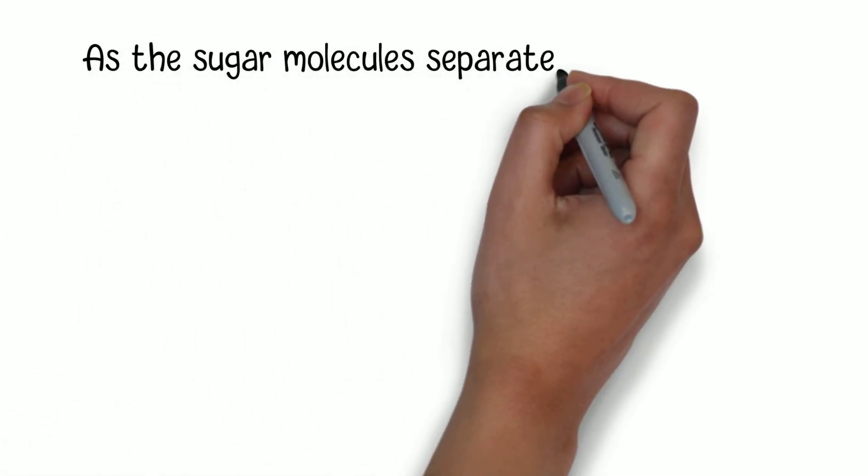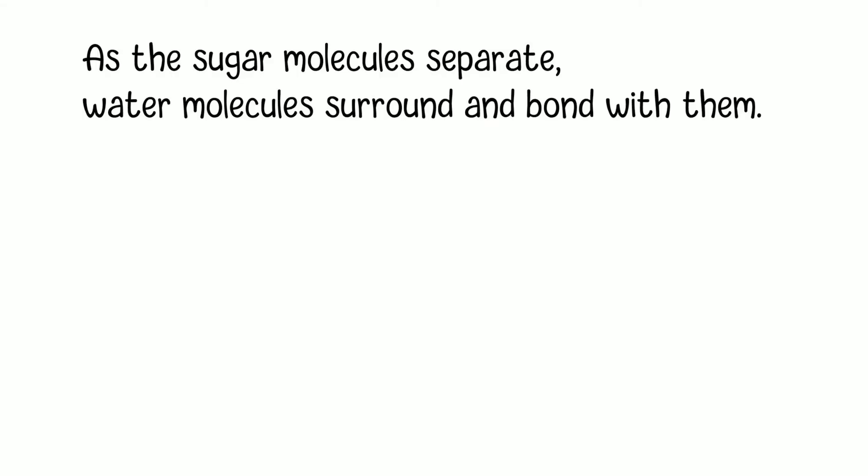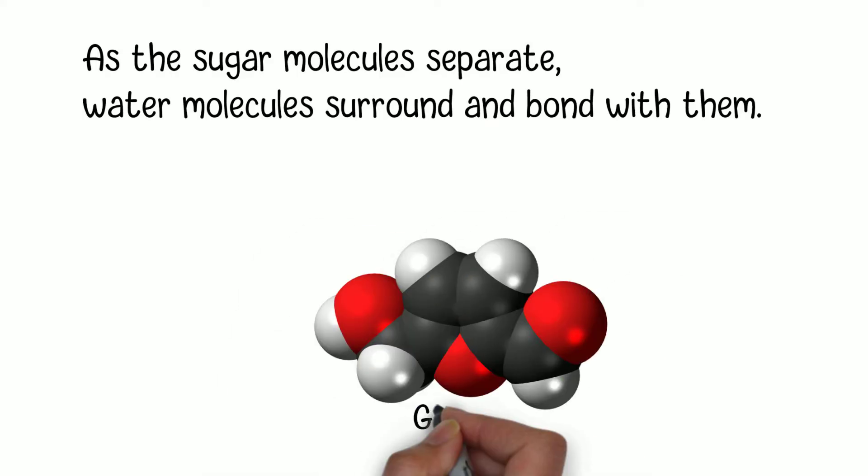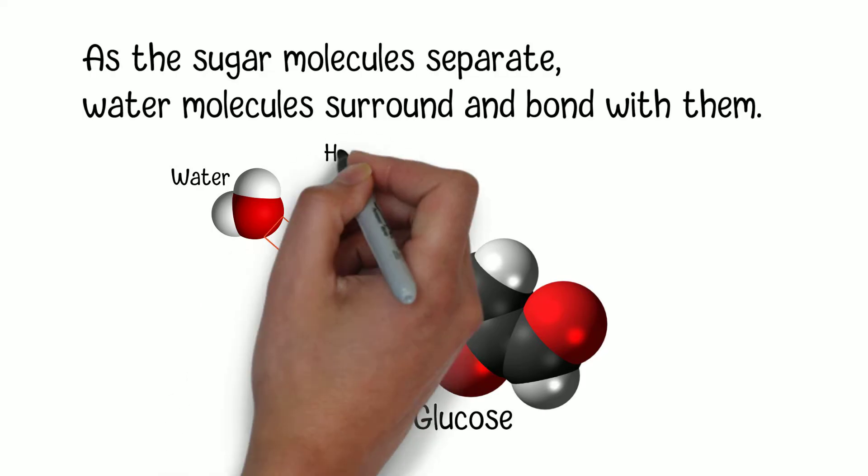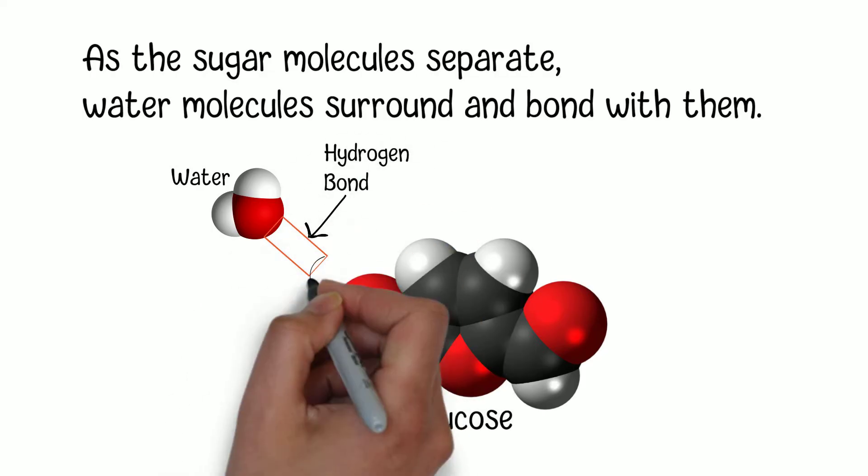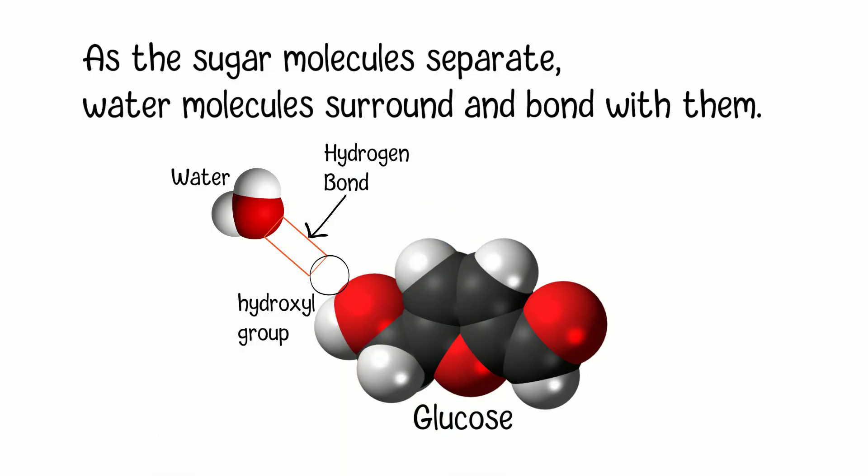As the sugar molecules separate, water molecules surround and bond with them. The oxygen atoms in the water molecules form hydrogen bonds with the hydroxyl OH groups on the sugar molecules. This process is called hydration or salvation, and it helps stabilize the sugar molecules in the solution.